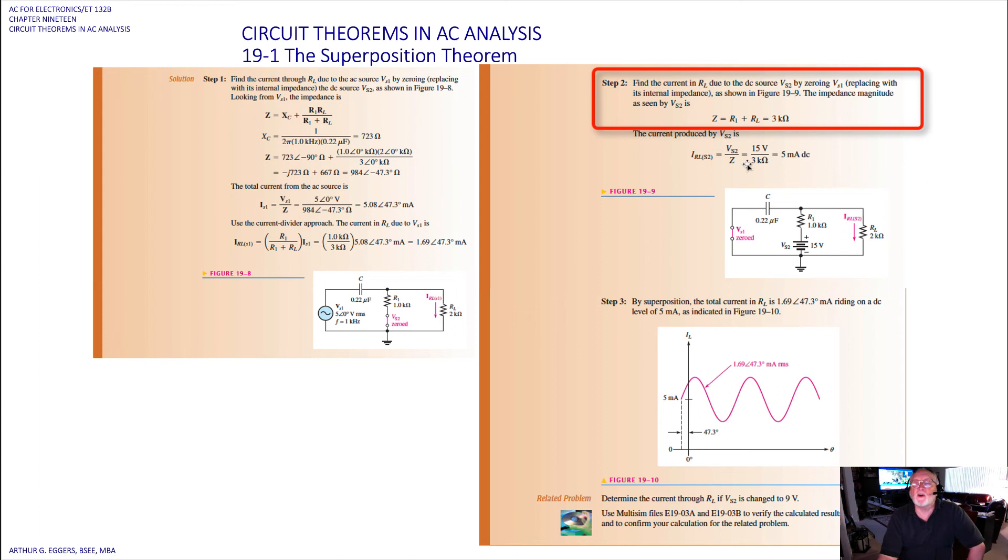Step 2 then, we're going to find the current in the load due to the voltage source, the DC voltage source. So we turn the voltage source back on, we put it back in the circuit. Now we're going to zero out or short out voltage source 1, replacing it with its internal impedance as shown. The impedance magnitude then of voltage source 2 is, so we've got impedance is equal to R1 plus R2, because it's just a series circuit, 3k ohms. The current then produced by source 2 is Vs2 divided by the total impedance, gives us 5 milliamps DC current.